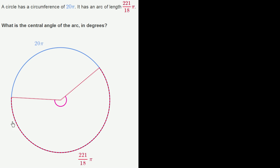So they're asking for this one. This is the arc that they're talking about. That's 221 over 18π long. And they want to know this angle that it subtends, this central angle right over here.